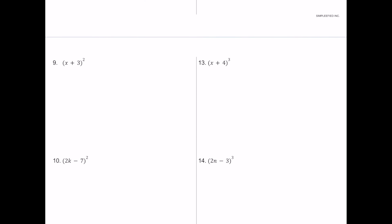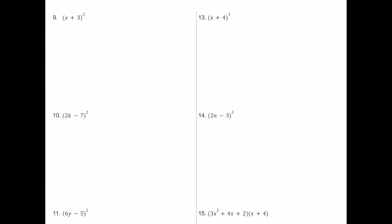For number nine, we have two identical binomials — the quantity of x plus 3 squared. We can rewrite this as x plus 3 multiplied by x plus 3, which now looks just like the previous problems.